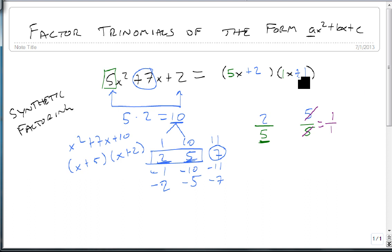And we should always check our answer. 5x times x is 5x squared. 5x times 1 is 5x. 2 times 1x is 2x. And 2 times 1 is 2. So notice we get back to our original, 5x squared plus 7x plus 2.